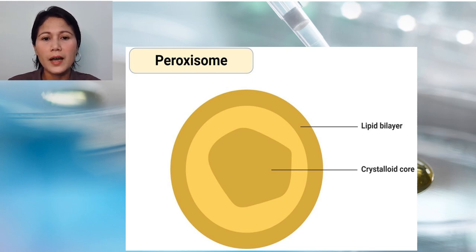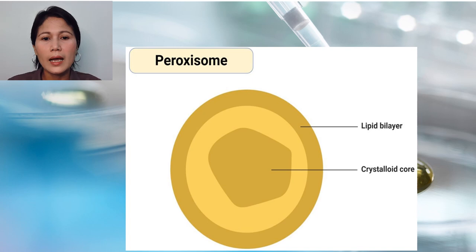Oxidation of fatty acids takes place within peroxisomes. Additionally, peroxisomes are also involved in the synthesis of lipids such as cholesterol and plasmalogens.